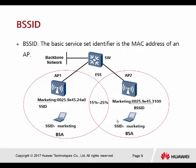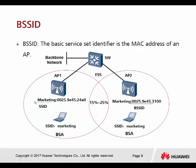The next concept is BSSID — basic service set identifier — which is the MAC address of an AP. Every single AP will have its own MAC address. For example, we have two APs broadcasting the same SSID. AP number one uses BSSID ending in 2480, while AP number two uses BSSID ending in 310. This is how the PC knows which AP it is connected to — by recognizing the BSSID.